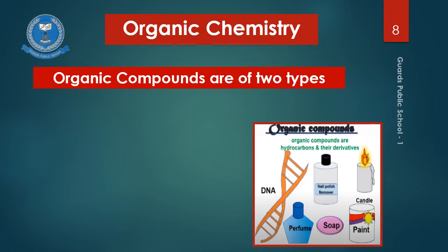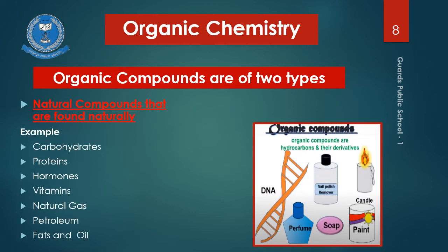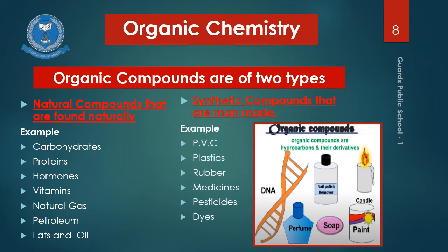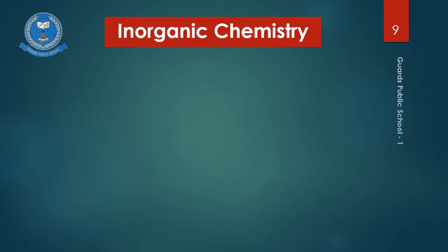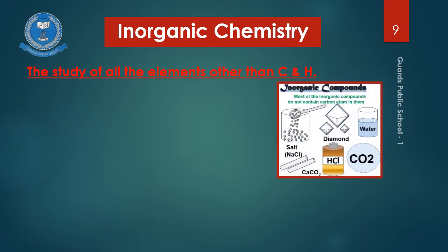Organic compounds are of two types: natural and synthetic. Natural organic compounds are found in nature and are well known for their uses — you can see the list of examples. Synthetic compounds, on the other hand, are man-made. The list of synthetic compounds is also very large. Just think about life without plastic, rubber, medicines, pesticides, and dyes — you can imagine that life without organic compounds is not possible.